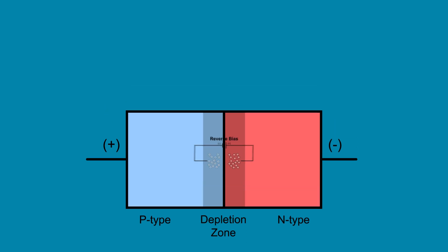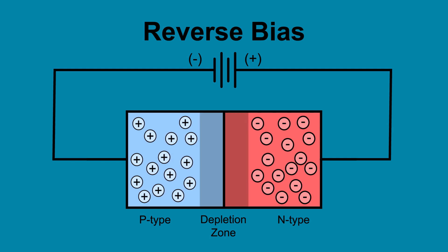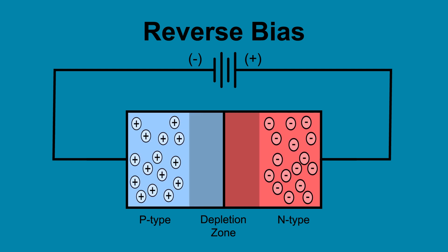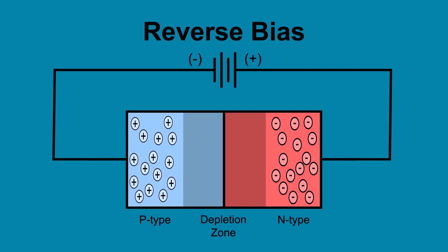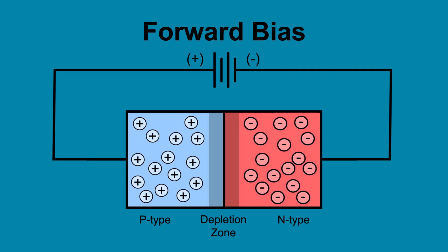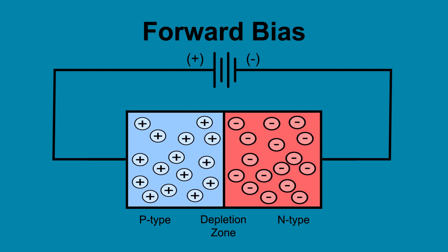When a diode is connected to power, the charged materials in either region react. When connected in reverse bias, the charges within each region are attracted to the charges at the terminals, widening the depletion zone, preventing current from flowing through the diode. When connected in forward bias, the charged particles within the diode are attracted to the opposite side terminal, contracting and closing the depletion zone, allowing current to flow through the diode.